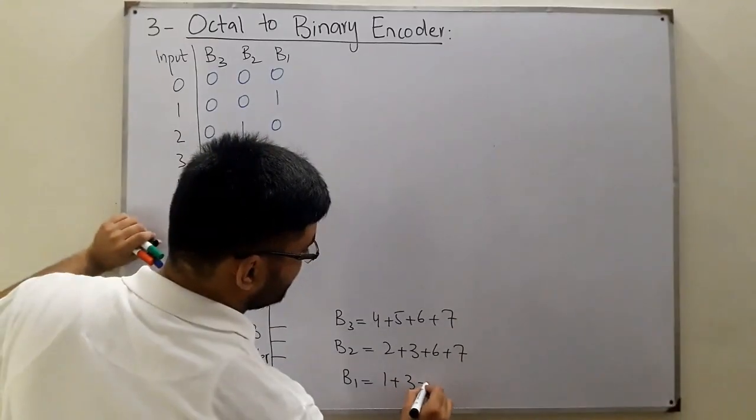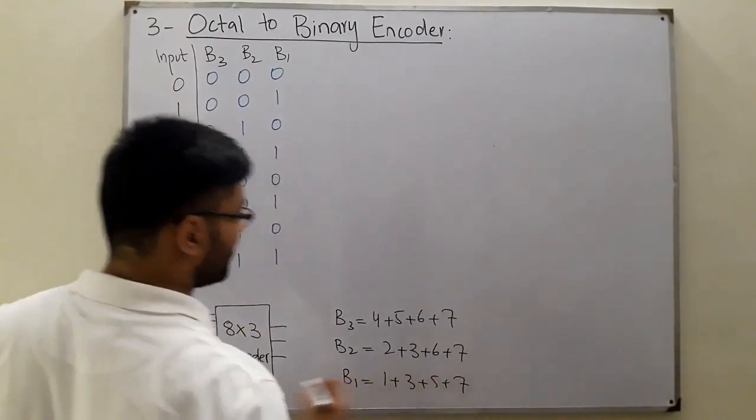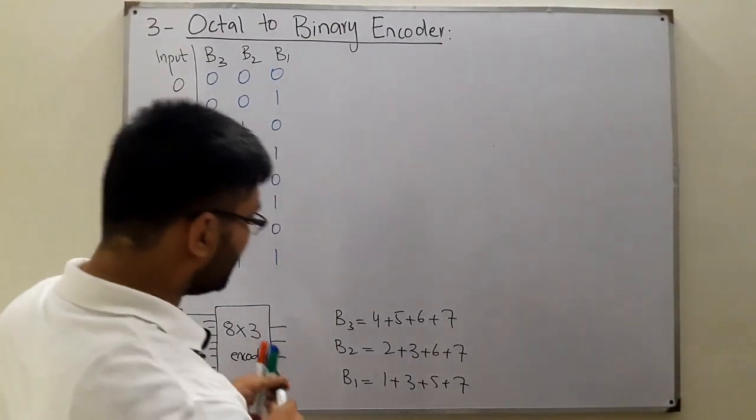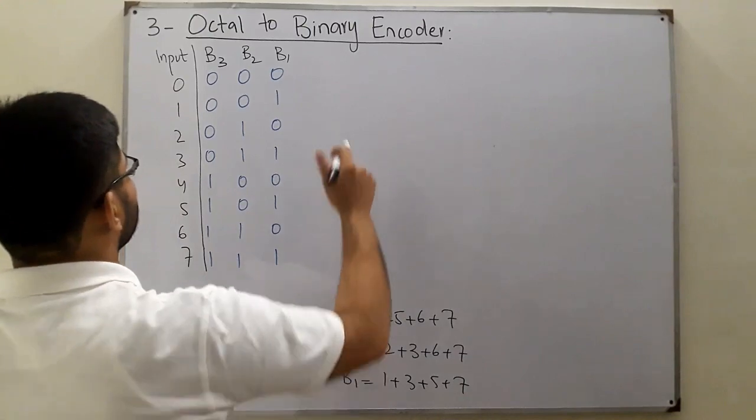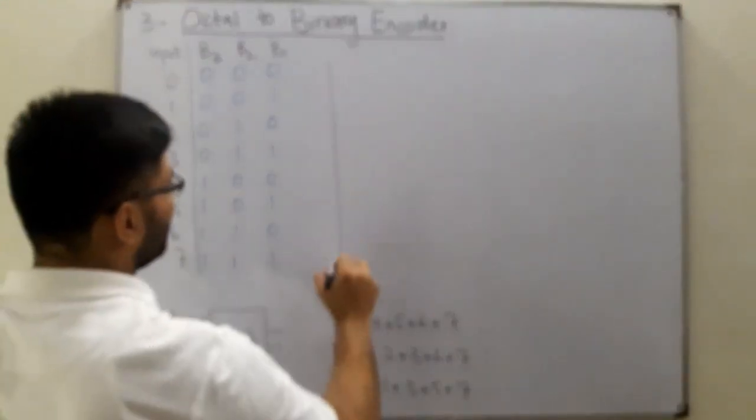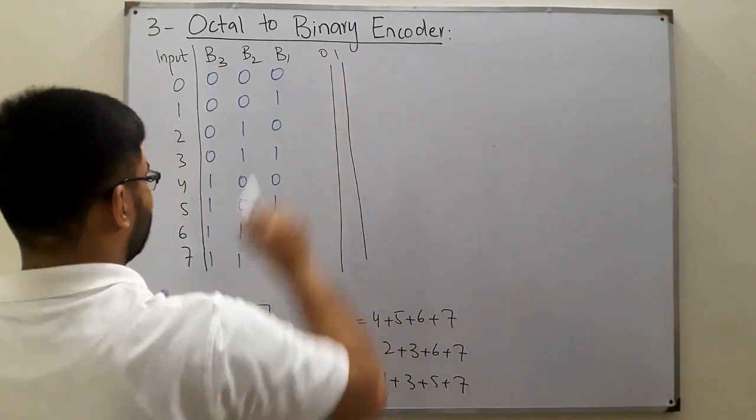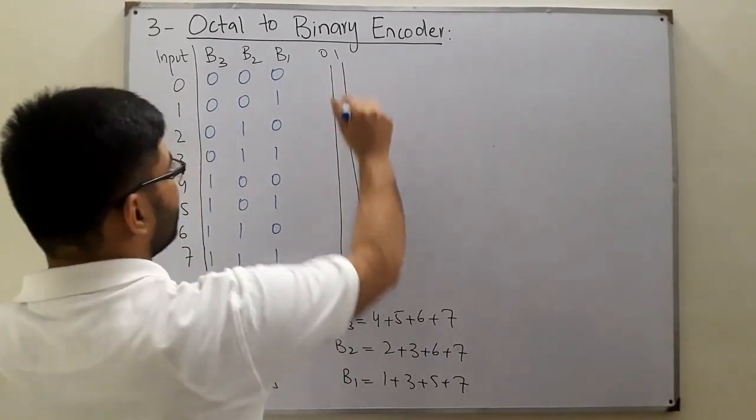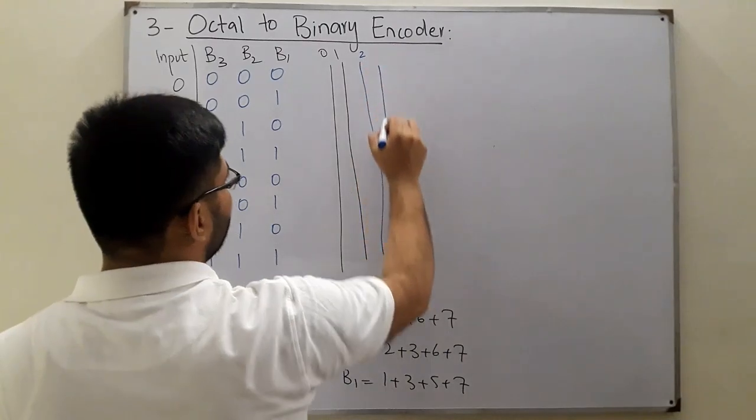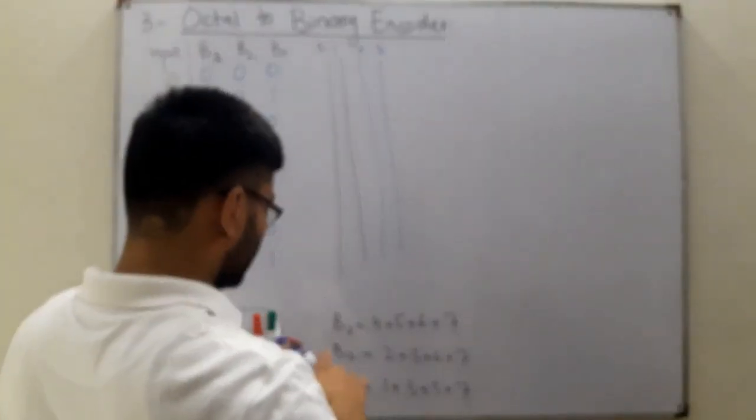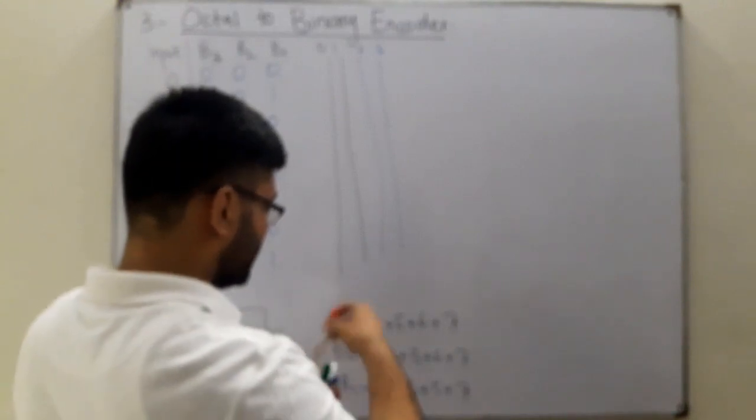Now you know how to draw it. Let's say this is 0, 1, then you have 2, and 3.